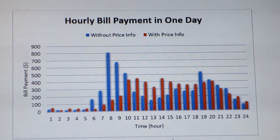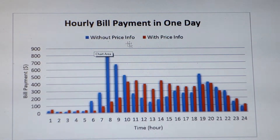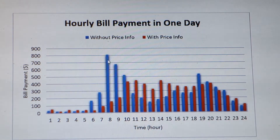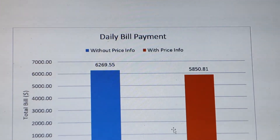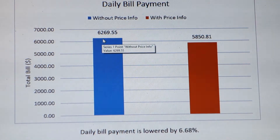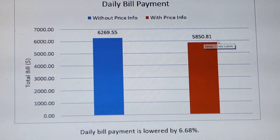The third result is the bill payment for each user. Without pricing information and no adaptive control, the x-axis shows each hour and the y-axis shows dollar payment — the bill payment is pretty high. With pricing information and adaptive control, the bill payment is lower. The total saving is 6.68%: previously the payment was $6,269, and after control with pricing information, it reduces to $5,850.